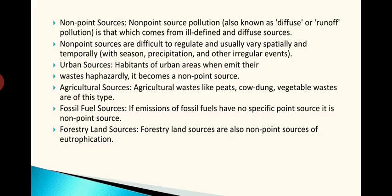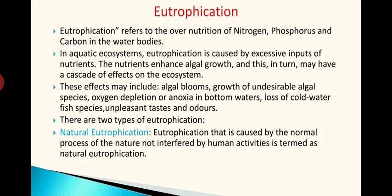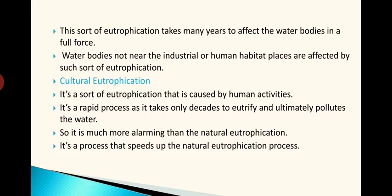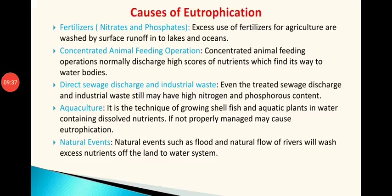From all these sources, whether non-point or point, the nutrients like nitrogen, phosphorus and carbon are reaching into the water bodies, which in turn causes eutrophication. The major cause for eutrophication is the use of fertilizers. Nitrates and phosphates are the major constituents of the fertilizers we use for excess production. If used in excess, dissolved nitrates and phosphates reach the water body along with rain water — excess fertilizers for agriculture are washed by surface runoff into lakes and oceans.